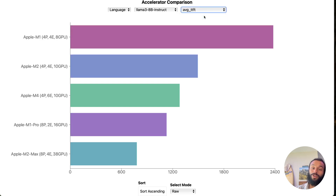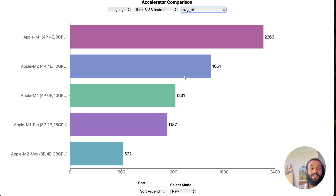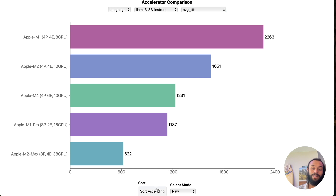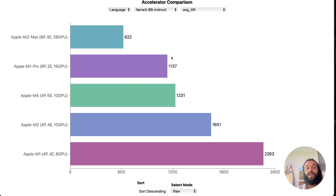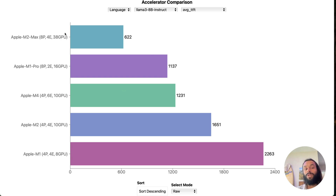Let's also take a look at the time to first token. This is representing how long it will actually take you to get a response from the large language model, and this is averaged over a bunch of different sized prompts and length of responses. We have the M2 Max at 600 milliseconds, which is very reasonable. Then we have the M1 Pro and M4 just over a second until you start getting a response — that's not fantastic, but it maybe shows that the M4 Pro is going to compete with that M2 Max.